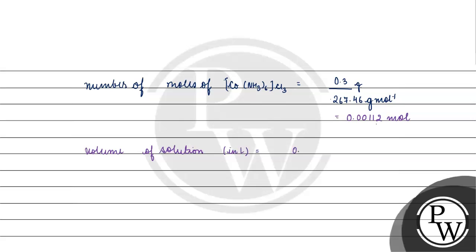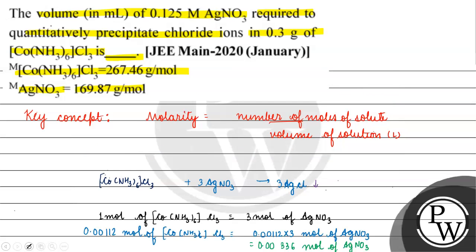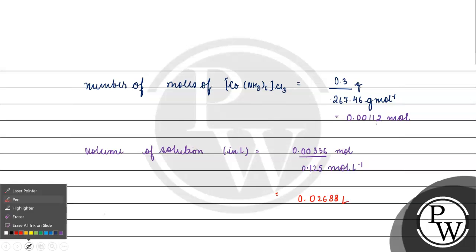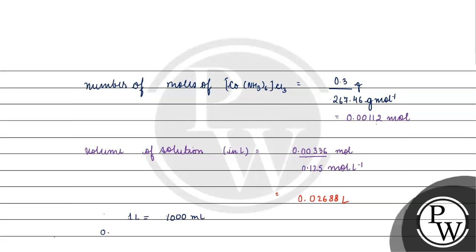How much number of moles will be? AgNO3 moles will be 0.00336 by what is molarity - 0.125 mole per liter. Right, we will solve. How much we will do? Ye hoga 0.02688 liters. Right, how much? Basically, 0.02688 into 1000 milliliters.